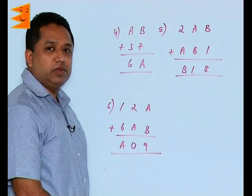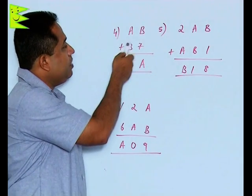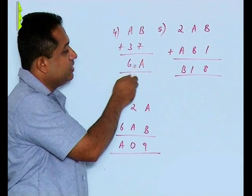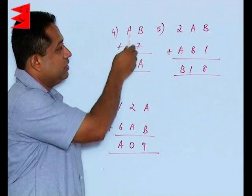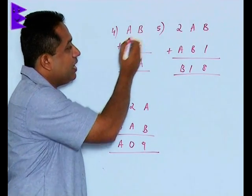We are looking at some more examples where we have to find the missing numbers. AB plus 37 is giving us 6A. So this is a 2 digit number added to a 2 digit number. We have to find out the value of A and B.